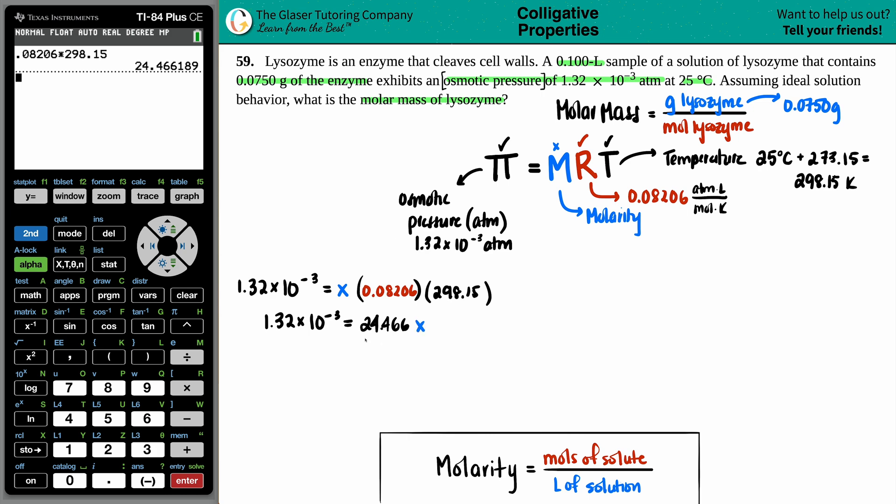So we get 1.32 times 10 to the negative third equals 24.466 times x. We want to get x by itself, so we just divide. So 24.466. That you want to put in times 10 to the without using parentheses. And if you have a calculator like this, you'll press the second button and the comma. This EE means times 10 to the. So 1.32 times 10 to the. Now all I have to do is plug in negative 3. And the calculator will always group that together divided by this answer. Just going to take the whole answer. And there we go. 5.395 times 10 to the negative fifth. And that's molarity.